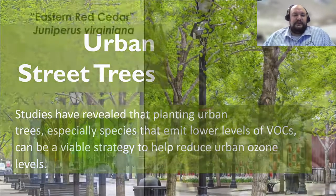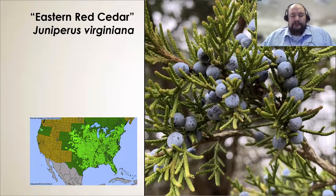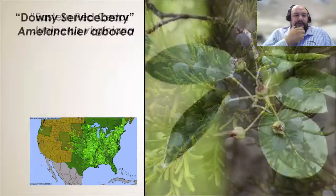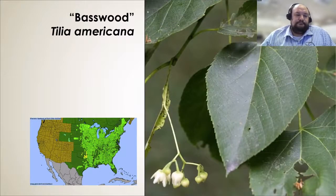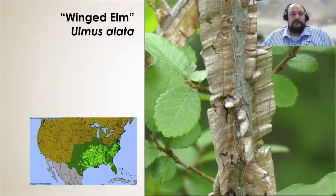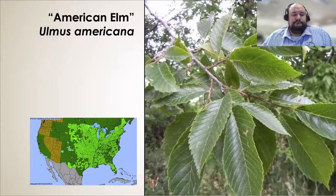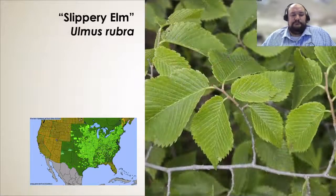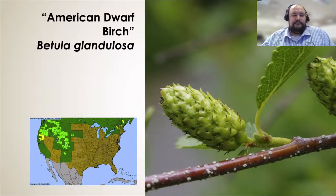Studies have revealed that planting urban street trees, especially trees that emit lower levels of VOCs, can be a viable strategy to help reduce urban ozone levels. Some potential trees that have been shown to emit lower amounts of VOCs include eastern red cedar (Juniperus virginiana), Junedown east serviceberry, basswood, winged elm, American elm, slippery elm, American dwarf birch, and water birch.